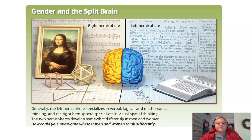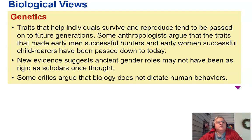Generally, the left hemisphere specializes in verbal and logical-mathematical thinking, and the right hemisphere specializes in visual-spatial thinking. The two hemispheres develop somewhat differently in men and women. Regarding genetics, traits that help individuals survive and reproduce tend to be passed on to future generations. Some anthropologists argue that traits that made early men successful hunters and early women successful child-rearers have been passed down. New evidence suggests that ancient gender roles may not have been as rigid as scholars once thought, and some critics argue that biology does not dictate human behavior.